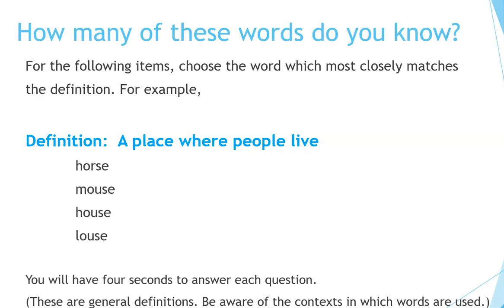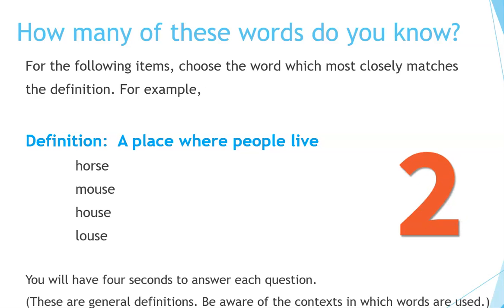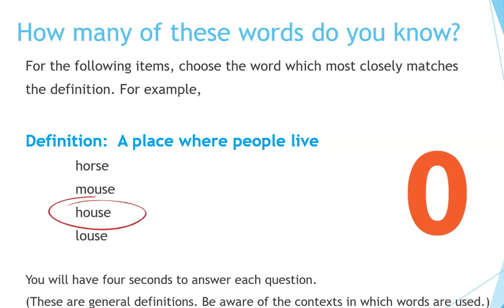For example — definition: a place where people live. Horse, mouse, house, louse. The correct answer is house. You will have only four seconds to answer each question. These are general definitions. Be aware of the context in which words are used. Ready to begin?